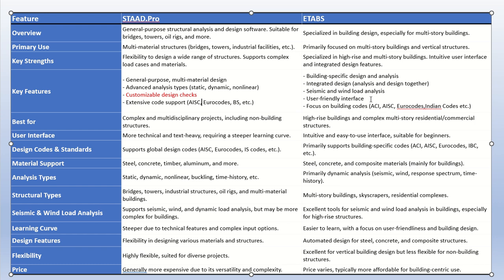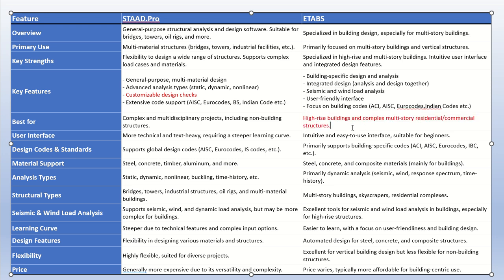STAAD Pro supports all codes including the Indian code, and it is best for complex and multidisciplinary projects including non-building structures — major and minor bridges, steel structures, PEB buildings, high-voltage steel towers, and many more. ETABS is very specific for high-rise buildings and commercial structures. If you want to go for high-rise building design, ETABS is better than STAAD Pro for that purpose.